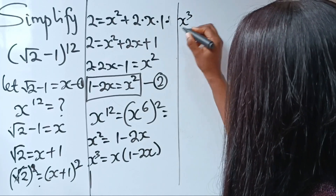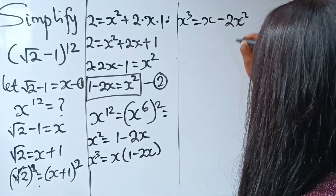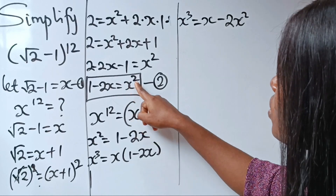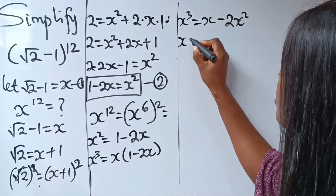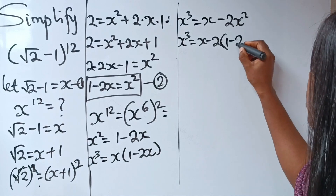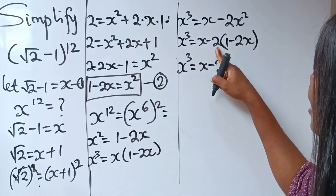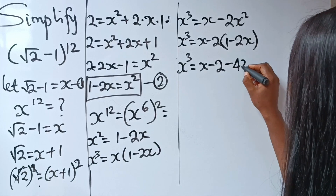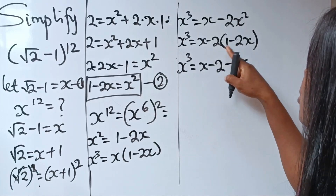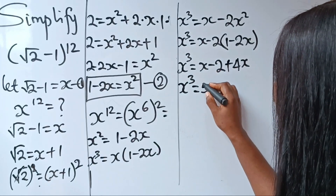So we have x to the power of 3 is equal to x times 1, which gives x, minus x times 2x, which gives 2x squared. Now recall that equation 2 is very important, so we substitute x squared with 1 minus 2x. We have x³ = x minus 2(1 minus 2x), which gives x minus 2 plus 4x. So x to the power of 3 equals 5x minus 2.